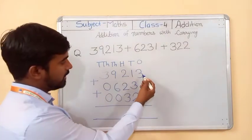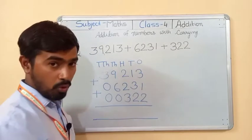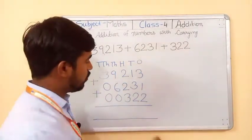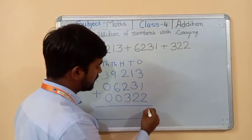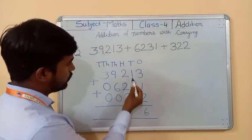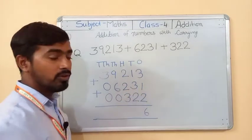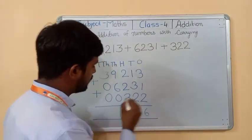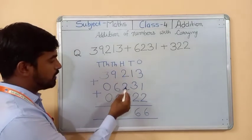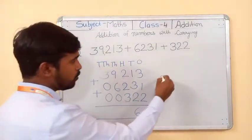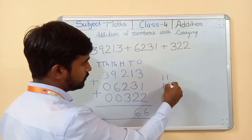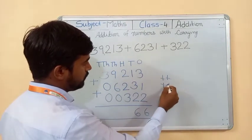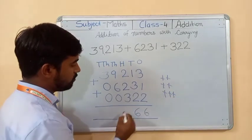Start adding: three plus one plus two equals six. Now three plus three plus zero equals six, again six. Now two plus two plus three: draw lines — that gives seven. Write seven here.